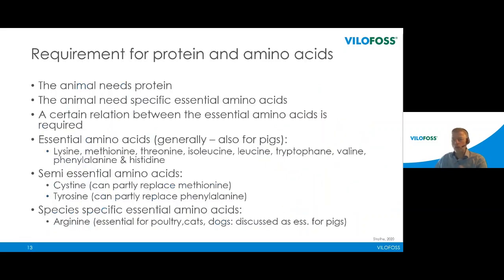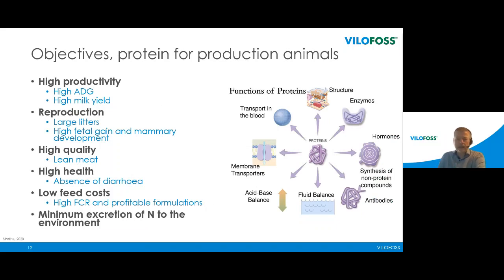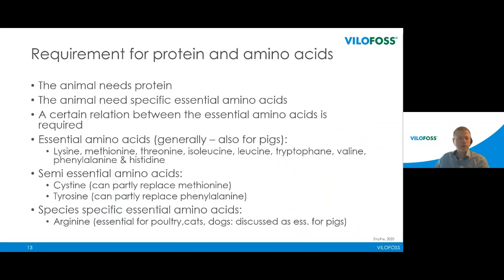Protein is not only about lean gain — it also produces enzymes, hormones, transporters, and membrane functions in cells. But volume-wise, lean gain and milk production take up the vast majority of protein from feed. The animal needs specific levels of essential amino acids. The essential amino acids are lysine, methionine, threonine, isoleucine, leucine, tryptophan, valine, phenylalanine, and histidine, plus the semi-essential amino acids. Arginine is definitely essential for some species and is sometimes discussed as essential for pigs as well.